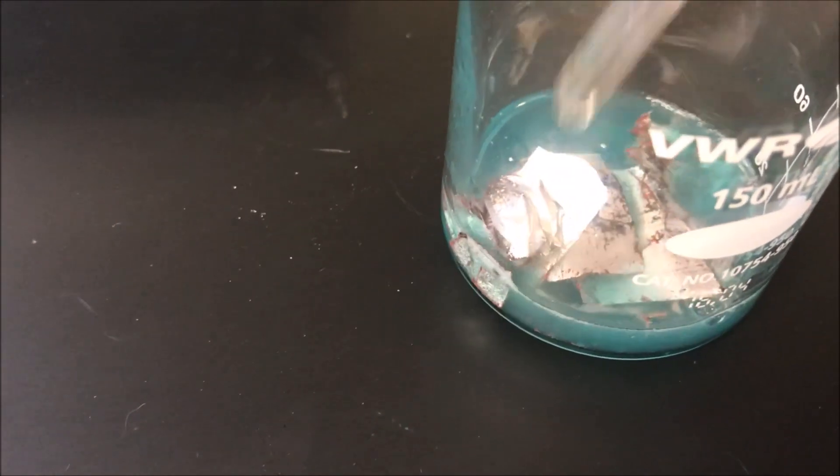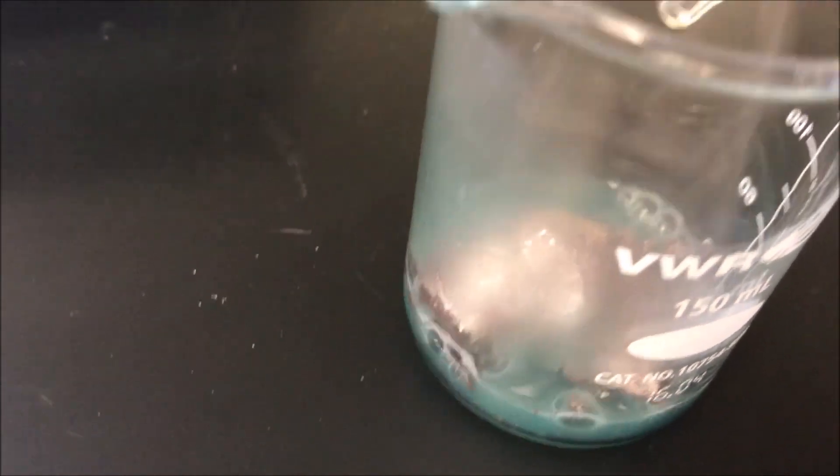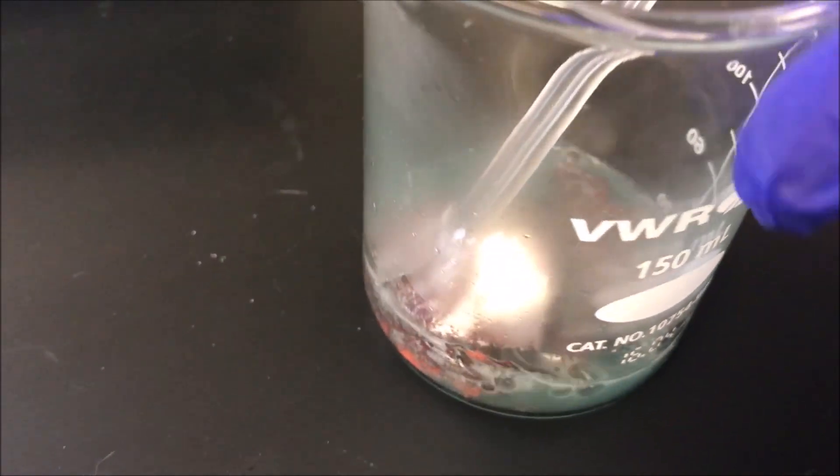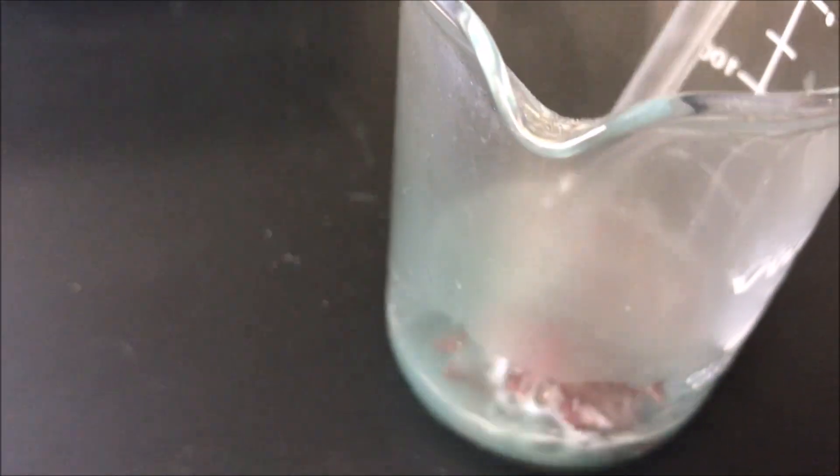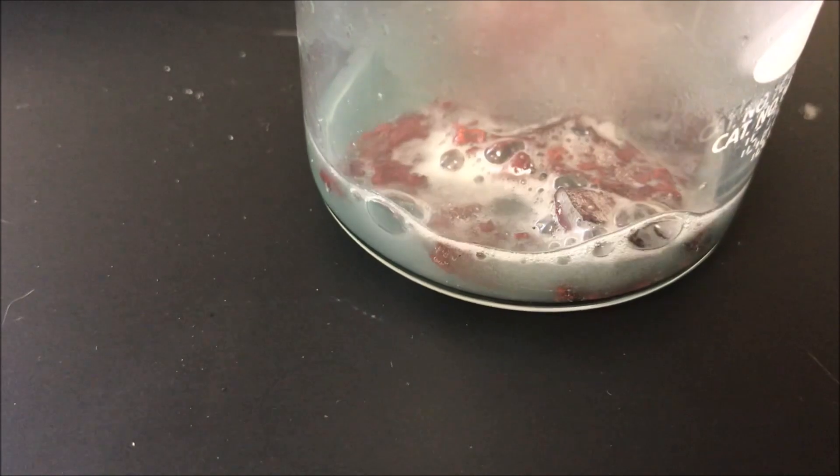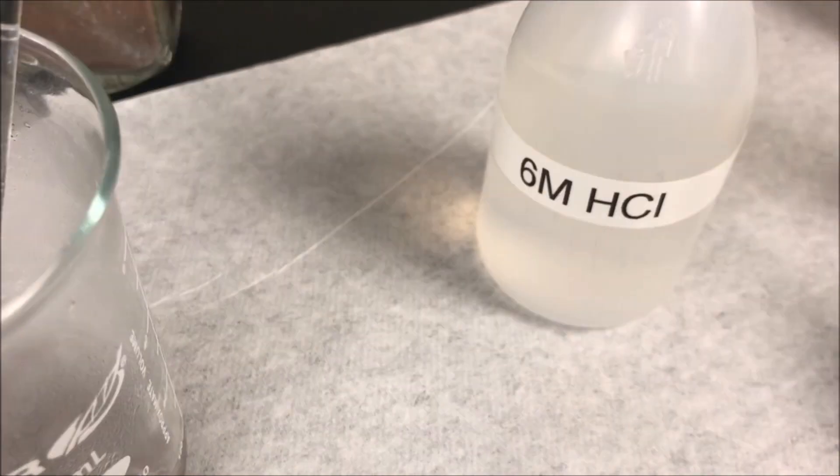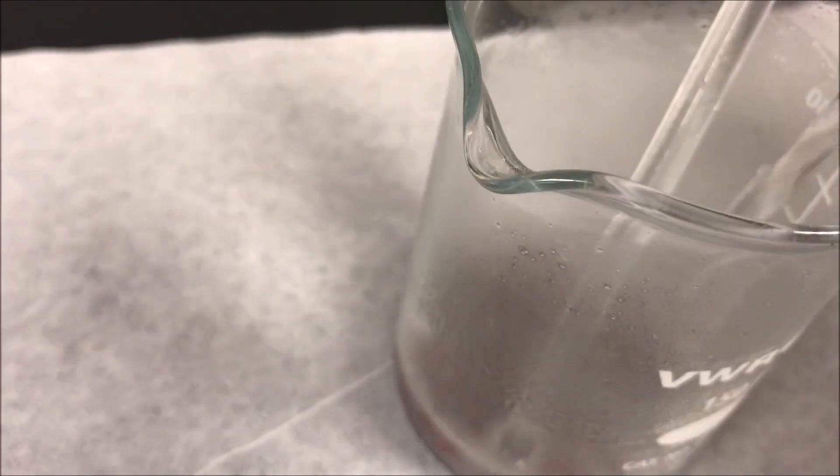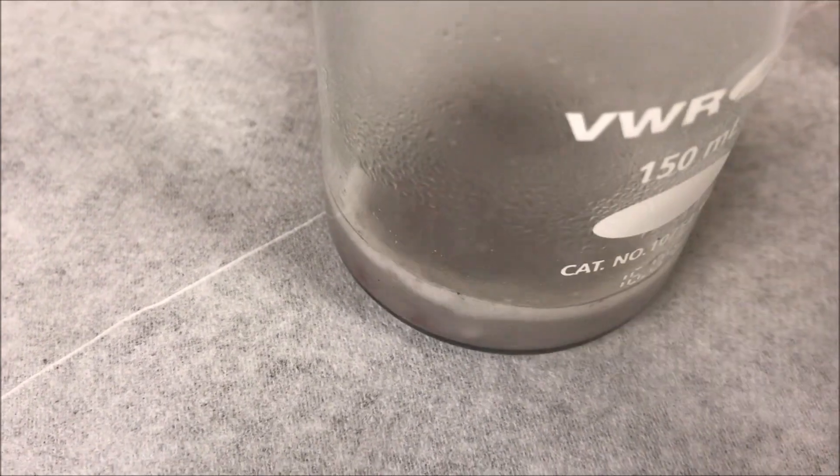Use the stirring rod to mix the solution. It's an exothermic reaction. If any aluminum foil remains, we can add 5 ml of HCl hydrochloric acid to make the reaction complete. I have a few more aluminum foil pieces remaining.